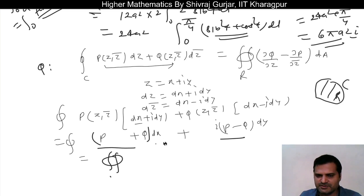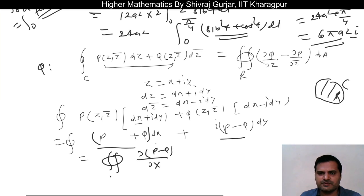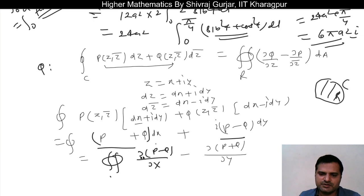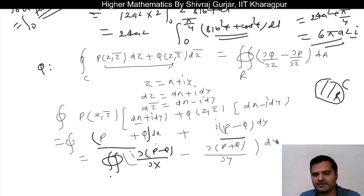Since P and Q have continuous partial derivatives, we can apply Green's theorem. Applying Green's theorem we have: del(p minus q) del x minus del(p plus q) divided by del y, into dx dy. This is basically the area element.